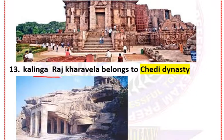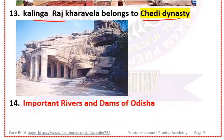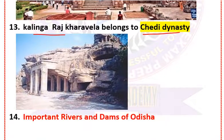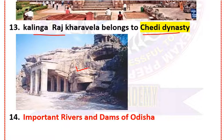Kharavela of Kalinga belongs to the Chedi dynasty — this is an important question. Hathi Gumpha is a famous inscription of Kalinga, shown in the picture.